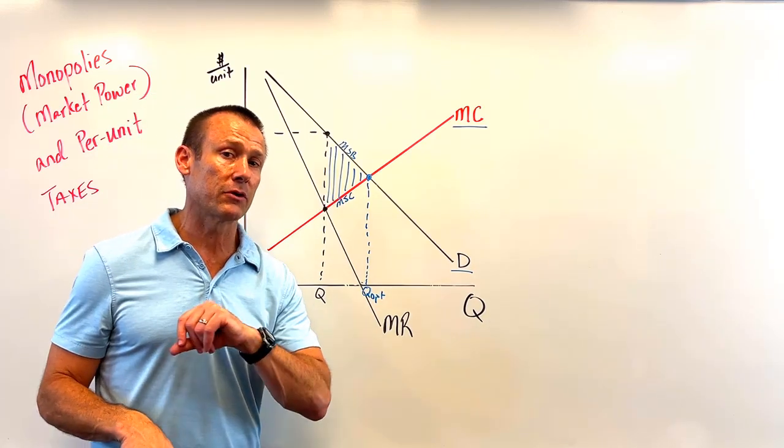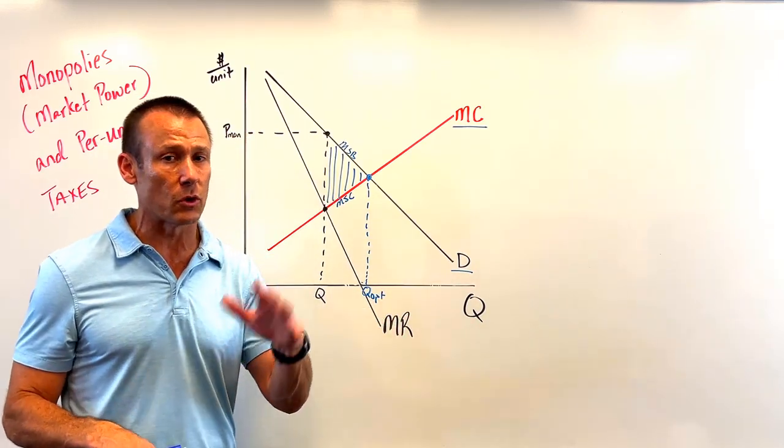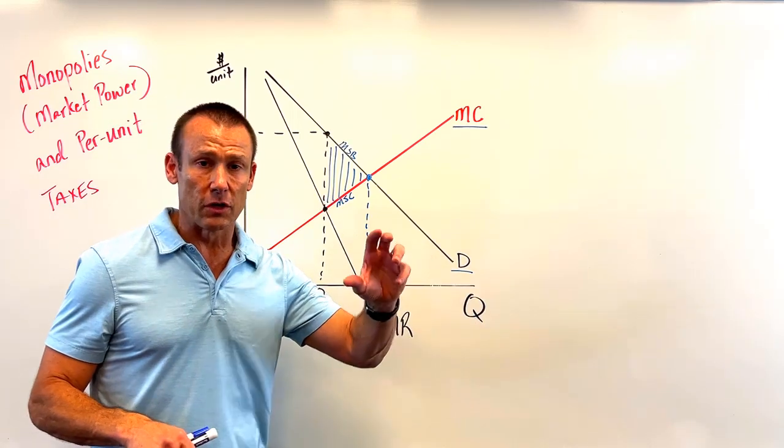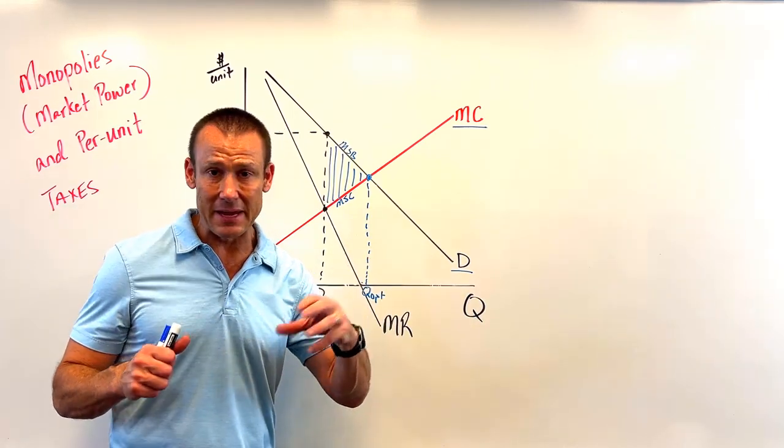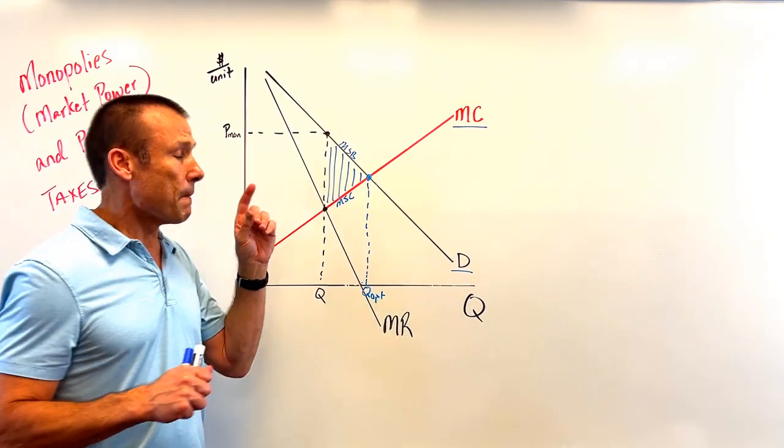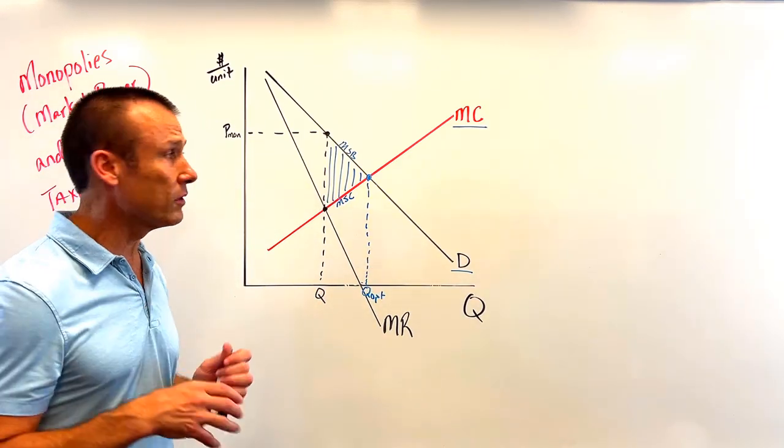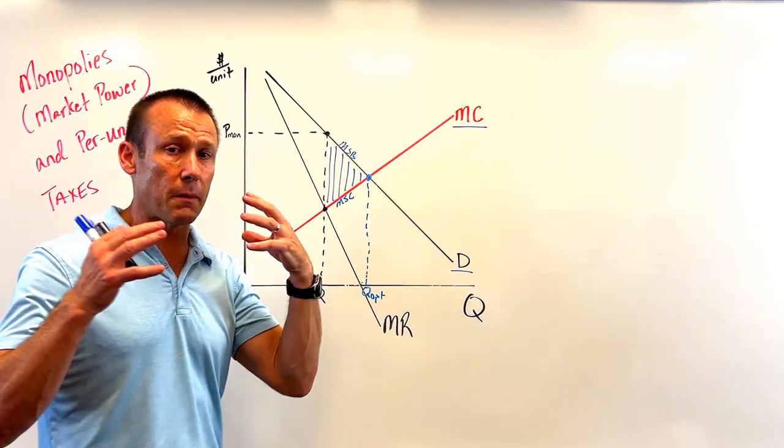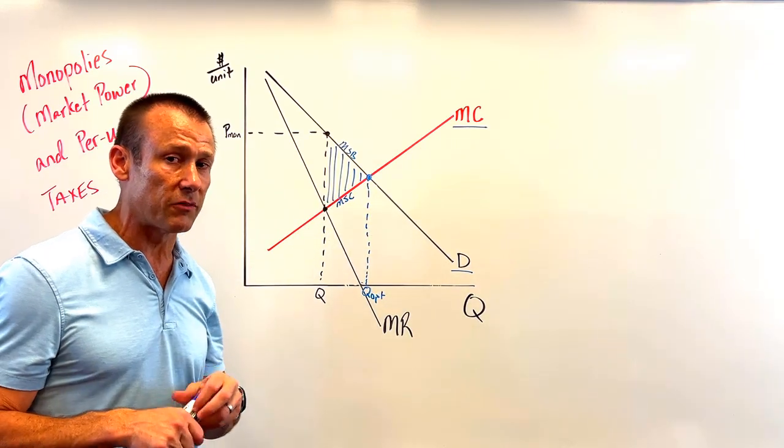So we decide to go with a per-unit tax, and yes, that per-unit tax is going to give us some government revenue. So that government revenue could allow us to do some things that the government may need to do because of public goods or positive externalities.